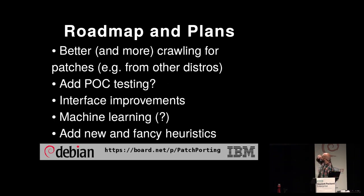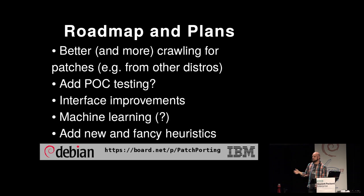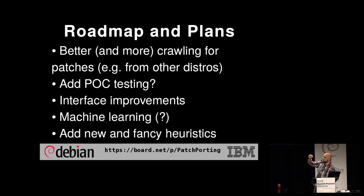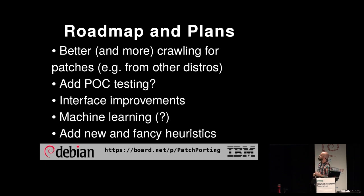It would be great to be able to crawl other distros searching for patches. We tried to do something with the Red Hat website but it's not so easy to find which patch solves a particular vulnerability. In the same way I'm suggesting a 'patch' field, it would be great to have a 'POC' field, because sometimes we add a proof of concept in the tracker — a file that makes the program fail. Maybe we can use that to check if the patch is good. That would give even more guarantees that a patch is a good one.